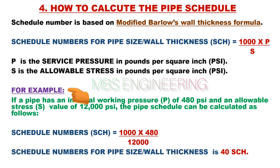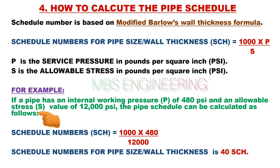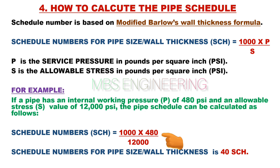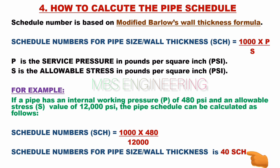For pipe schedule calculation: if a pipe has an internal working pressure P of 480 psi and an allowable stress S of 12,000 psi, the pipe schedule can be calculated as follows. Applying the formula: SCH = 1000 × 480 / 12,000. Therefore, the schedule number for the pipe wall thickness is Schedule 40.